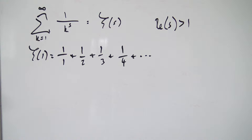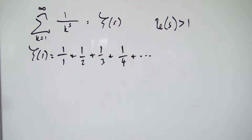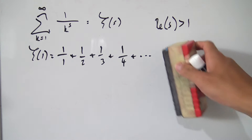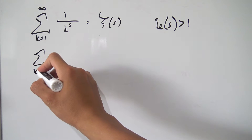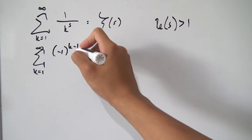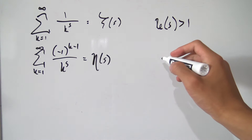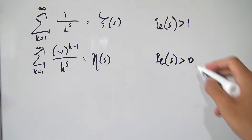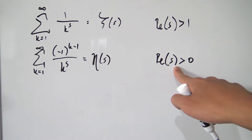So we want to come up with another definition for our Riemann zeta function that converges for the real part of s greater than one, but also for the real part of s greater than zero. The way we're going to do that is by using the Dirichlet eta function. The Dirichlet eta function is exactly the sum running from k equals one to infinity of negative one to the k minus one over k to the s. It converges for the real part of s being greater than zero — we'll take that for granted here.